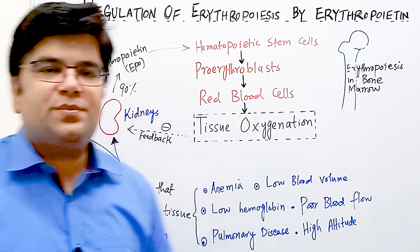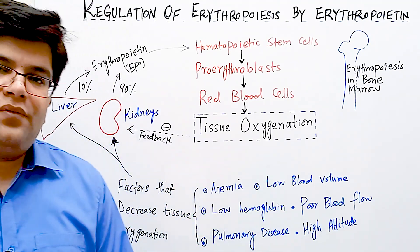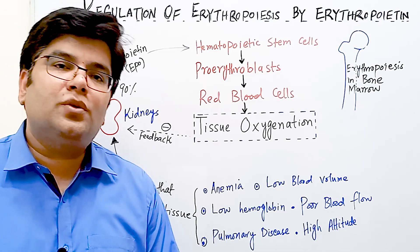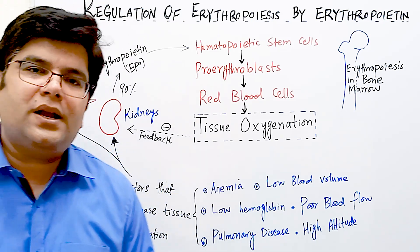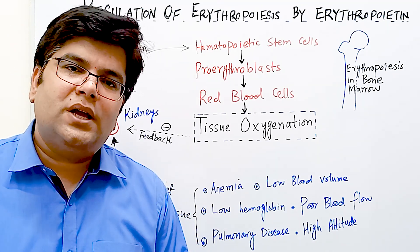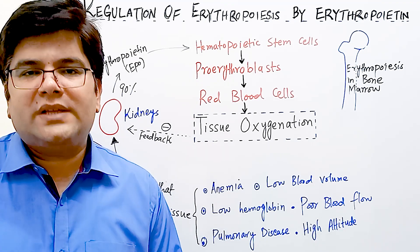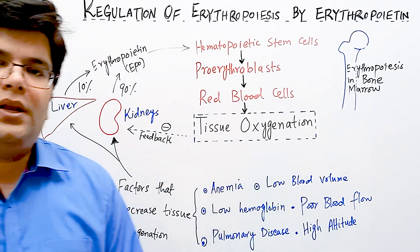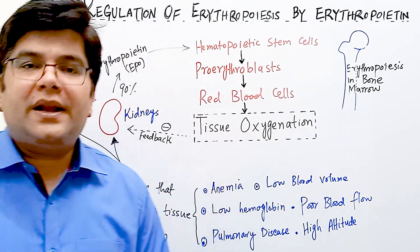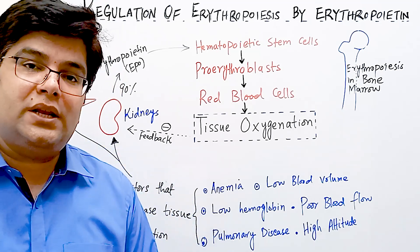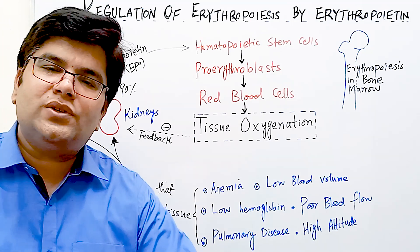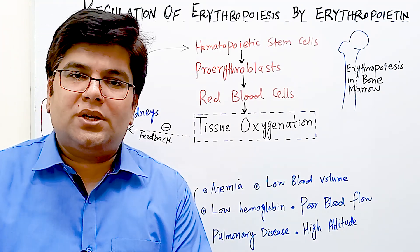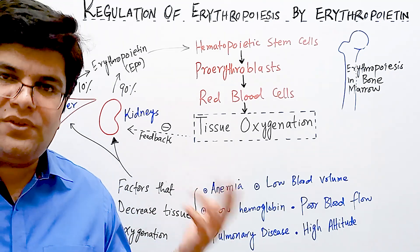Erythropoietin is produced in the kidney from fibroblast-like interstitial cells around the tubular cells of the nephrons in the cortex and outer medulla, and also from peritubular capillaries and tubular cells of the nephrons. The tubular cells — especially those of the proximal convoluted tubule — are very active in electrolyte transport, requiring large amounts of ATP, and therefore consume a lot of oxygen, making them highly sensitive to tissue oxygenation levels.